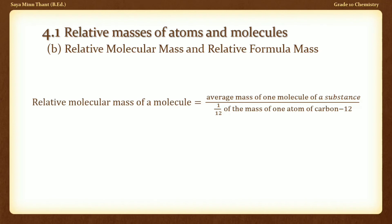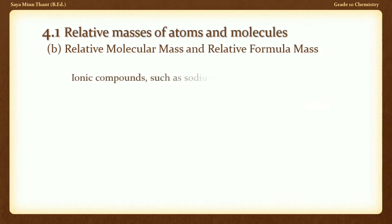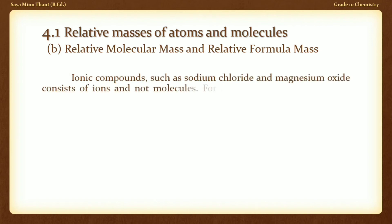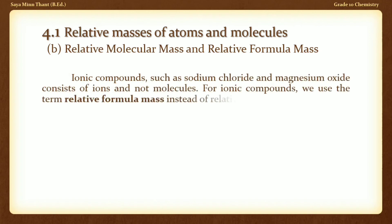For ionic compounds such as sodium chloride and magnesium oxide, we cannot map a relative molecular mass in the same way, so for ionic compounds we use relative formula mass instead.